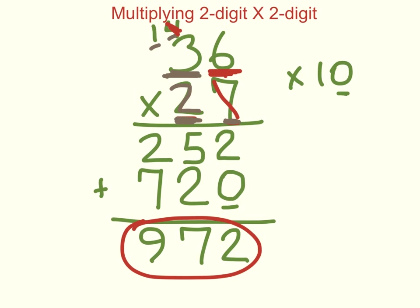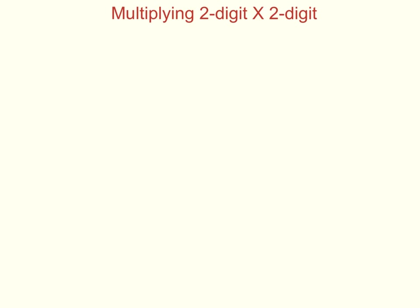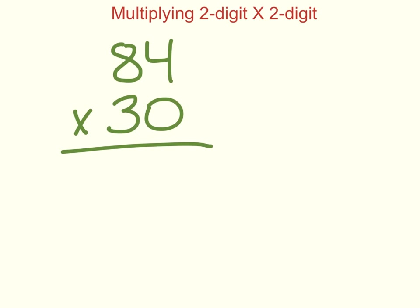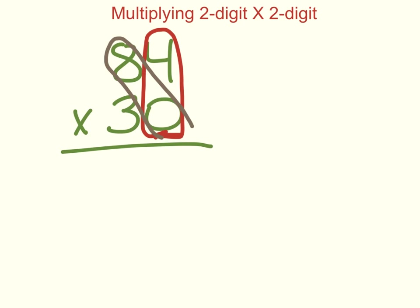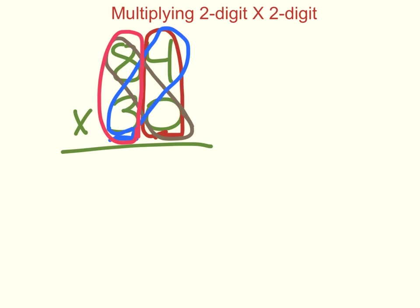Should we try one more example together? In this example I'm going to show you the steps — it's going to get a little messy, but we'll explain it as we go. Let's do 84 times 30. Remember, I always start with my ones place value number on the bottom, multiply it by the ones up top, then multiply it by the tens. After that, I move to my tens place value and multiply that by the ones, then by the tens. So there are several steps, and you can see how that gets a little messy.